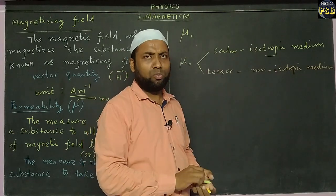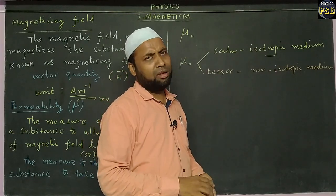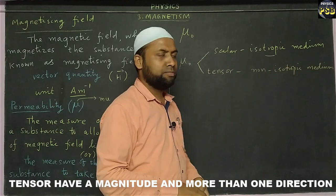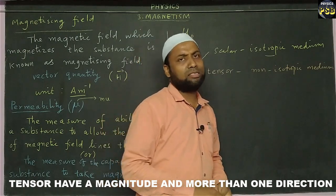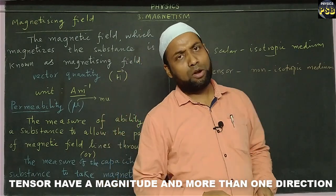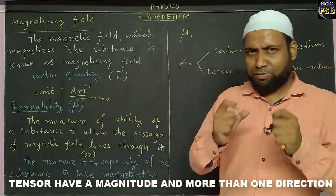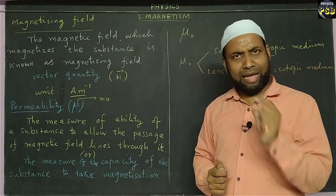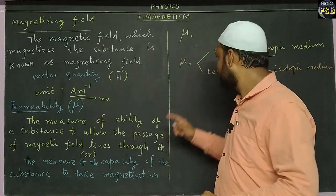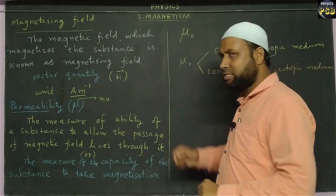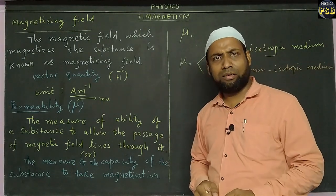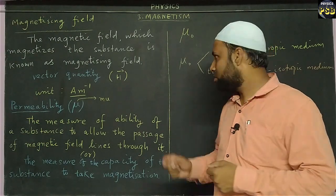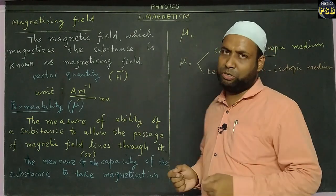Now, what do we mean by tensor? A tensor is similar to a vector quantity, but there is a small difference: a vector has magnitude and direction, whereas a tensor has multiple directions along with the magnitude.